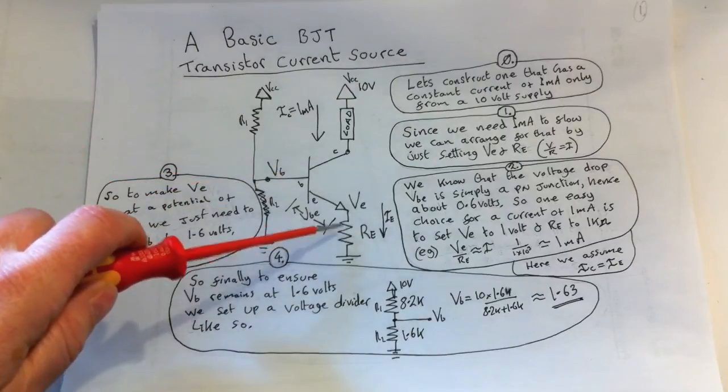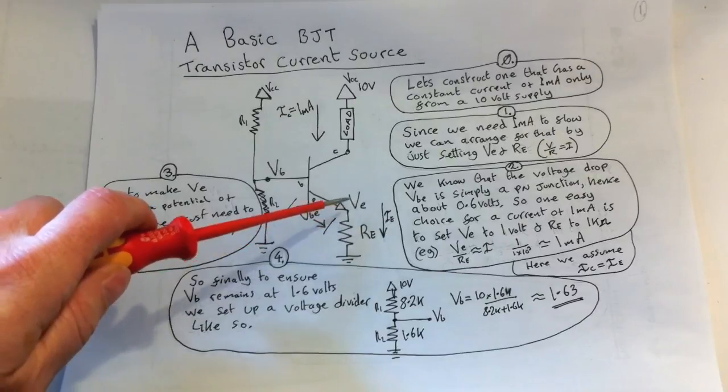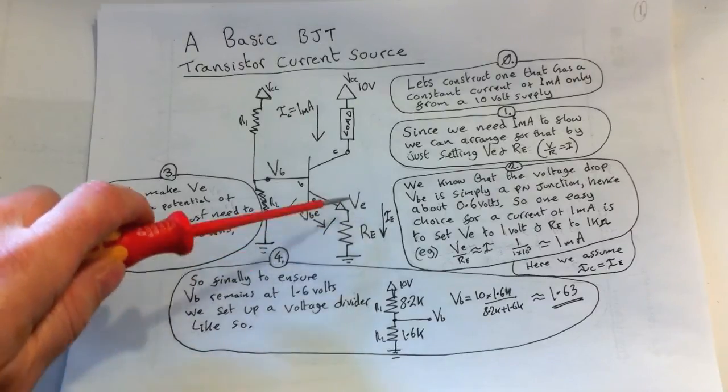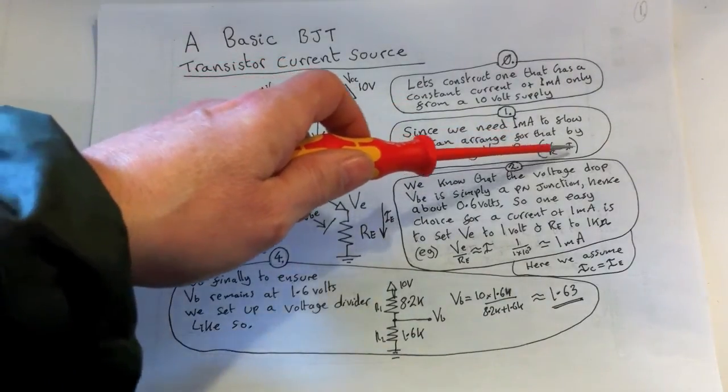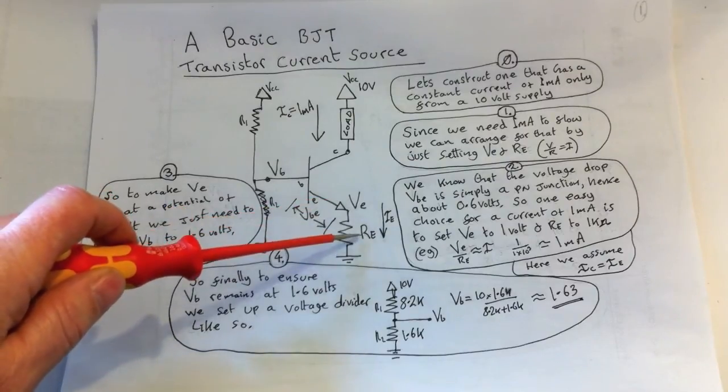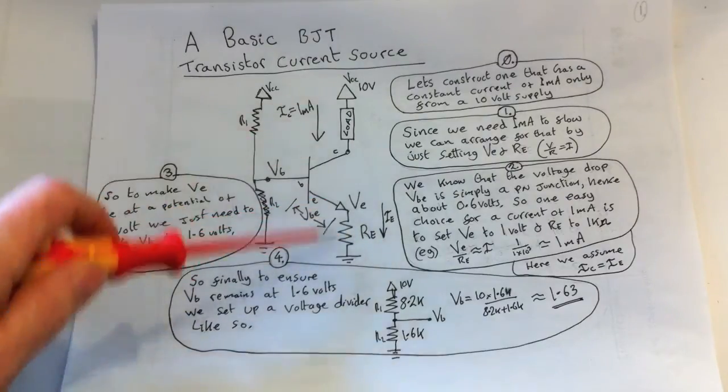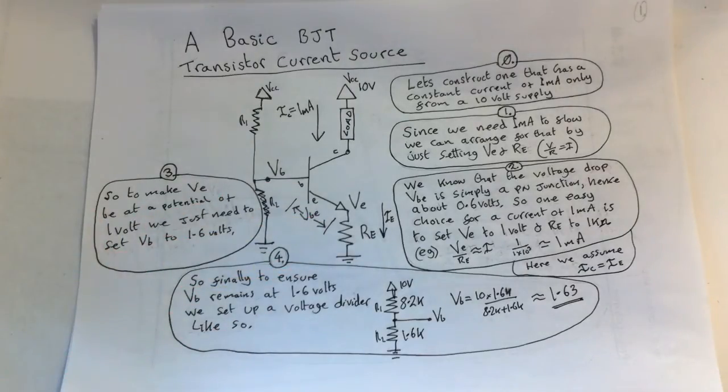We can arrange that by setting the emitter voltage. If we set the emitter voltage, then we know the current that flows down here is simply using Ohm's law: V over R equals I. So once we've set the emitter voltage and the emitter resistor, we'll have set that current.